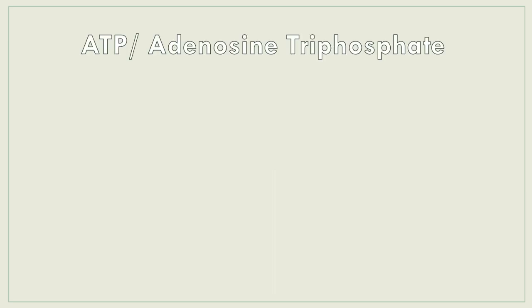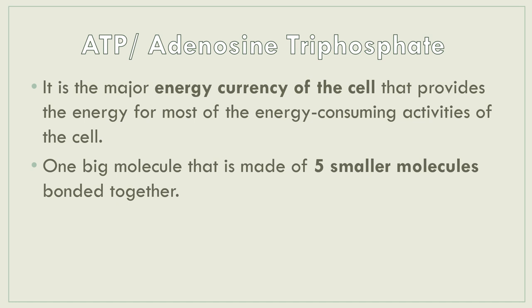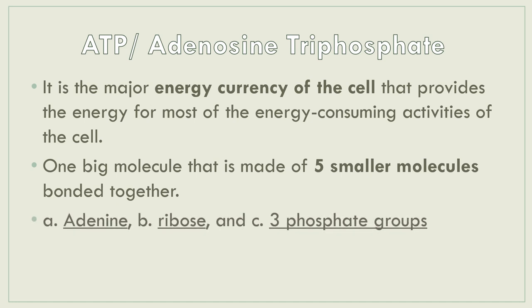Let's have a quick review on the term ATP, or adenosine triphosphate. This is the major energy currency of the cell. Just as money makes the world go around, for our cell, everything revolves around ATP. It provides energy for all energy-consuming activities of the cell. ATP is a big molecule made up of five smaller molecules bonded together: adenine, ribose, and three phosphate groups — that is why it is called triphosphate.